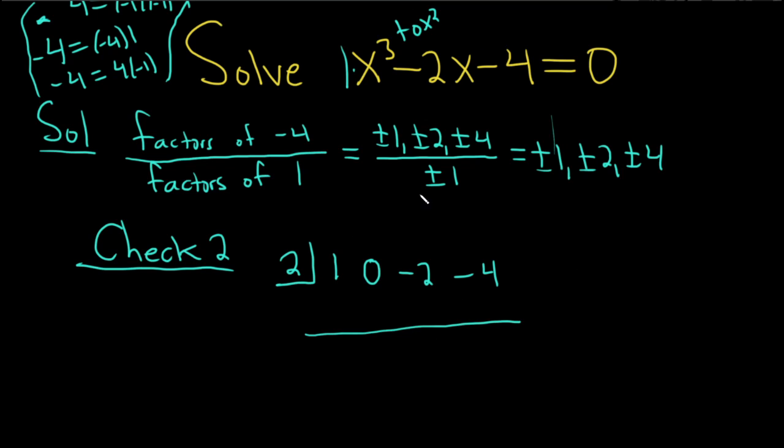To start the synthetic division process, you just take the 1 and bring it down. Then you multiply. 1 times 2 is 2. Then you add 0 plus 2 is 2. 2 times 2 is 4. Then you add negative 2 plus 4 is 2. 2 times 2 is 4. Then you add, you get 0. That's good. Whenever you get 0, that means that this number is a solution. So x equals 2 is a root or a solution to the equation. So that's one of our answers.